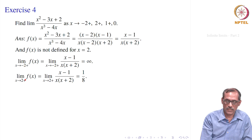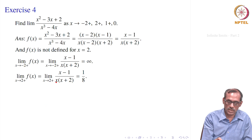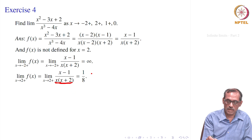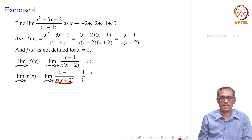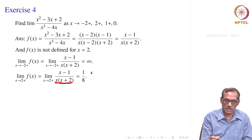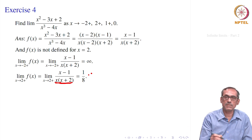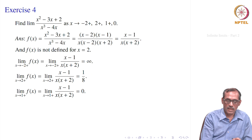For x → 2+, x is bigger than 2 and near 2. There is no problem in the denominator: x(x+2) → 2·4 = 8. The numerator x - 1 → 1. So the limit is 1/8, justified formally by the algebra of limits: numerator limit is 1, denominator limit is 2 × 4 = 8.